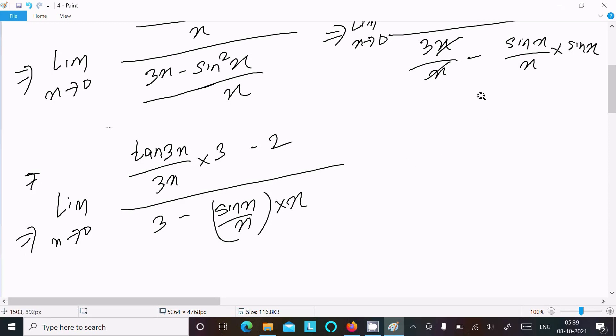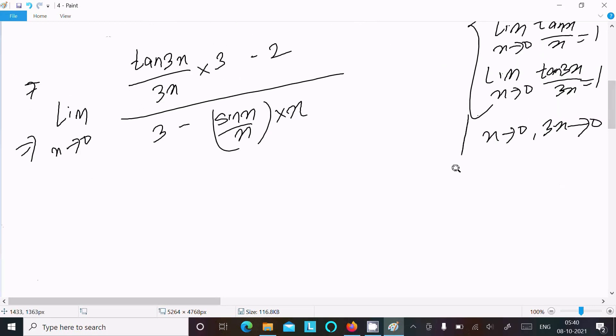Now we have the formula: limit x tends to 0, tan x by x equals 1. So here x tends to 0, tan 3x by 3x equals also 1, because when x tends to 0 then 3x also tends to 0. And another formula we need to use: limit x tends to 0, sin x by x equals 1.